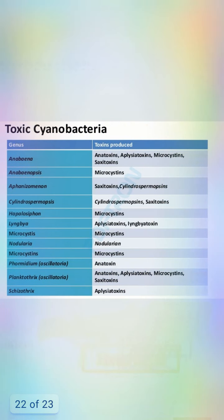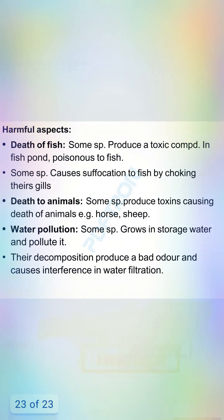Taxonomic classification of cyanobacteria includes genera such as Anabaena, Nostoc, Aphanizomenon, Scytonema, Hyalothece, Microcoleus, Oscillatoria, Phormidium, Lyngbya, and Oscillatoria. These represent the major taxonomic groups of cyanobacteria.